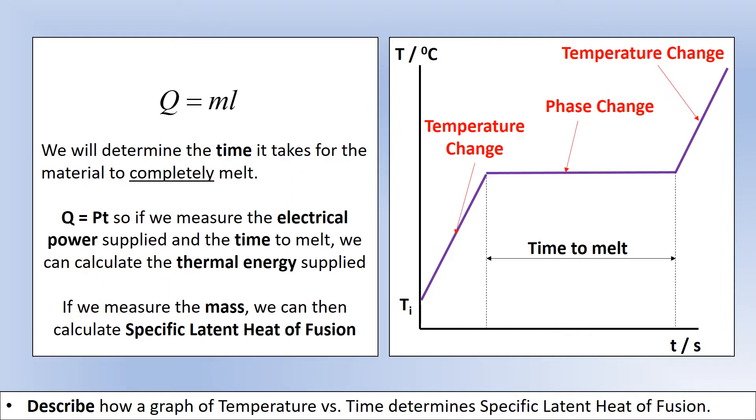This graph you should be fairly familiar with from the heat and temperature topic. We've got these two distinct regions: the temperature change regions where the specific heat capacity would apply, and we've got these phase changes where the latent heat would apply.